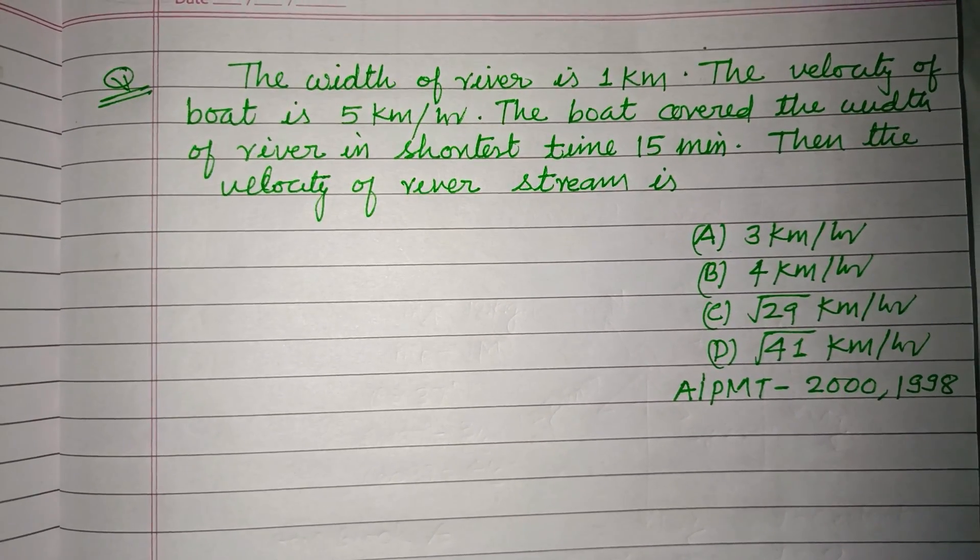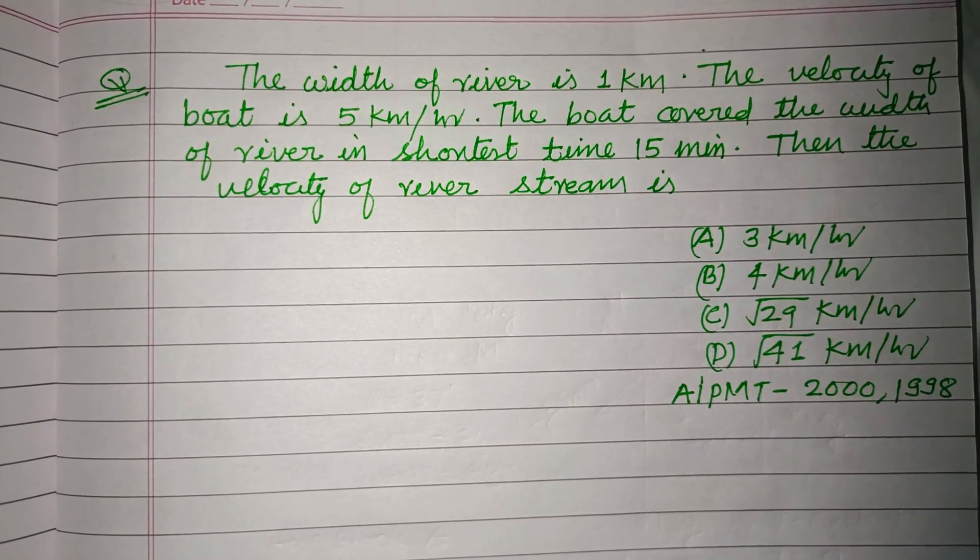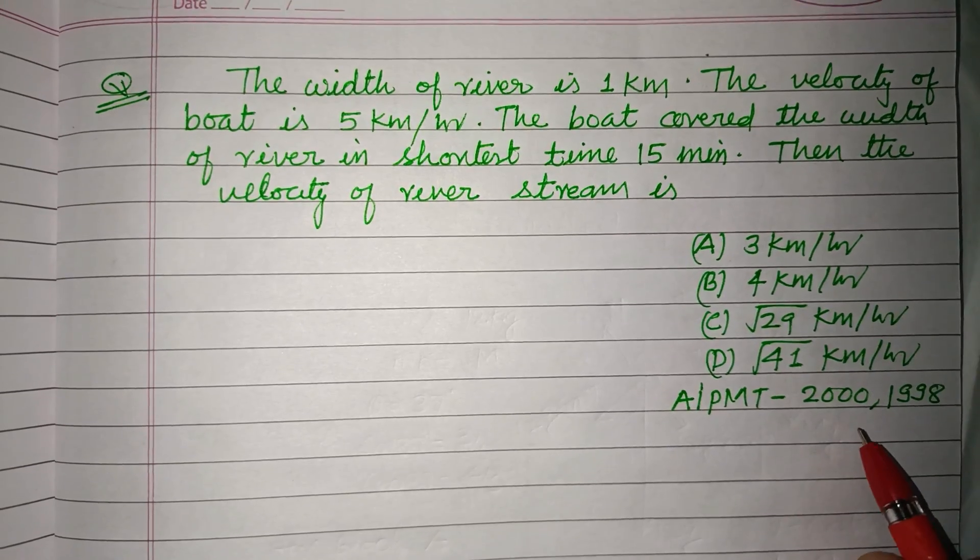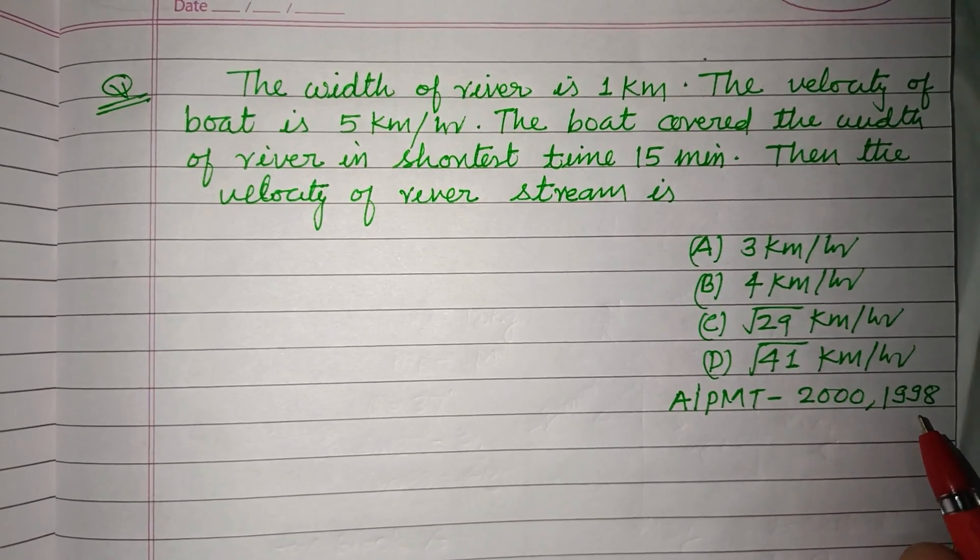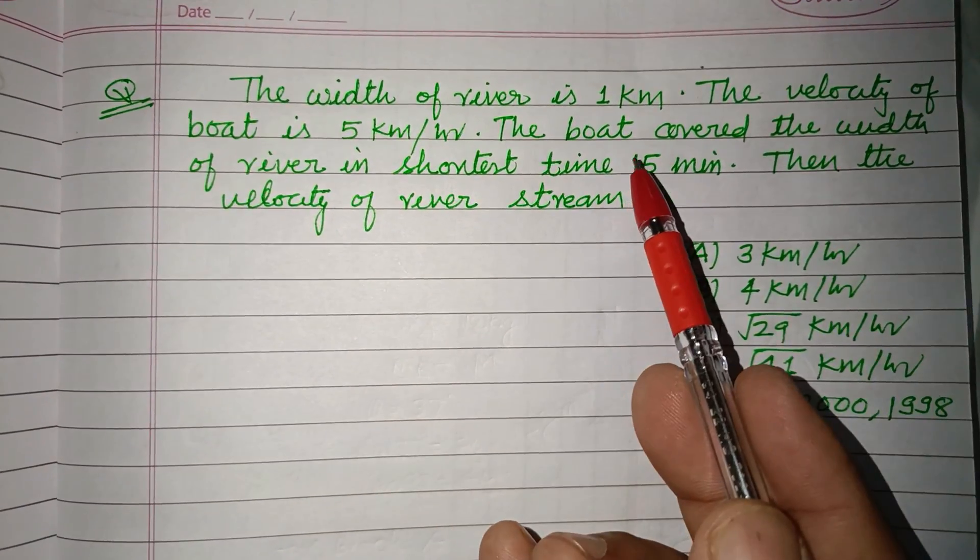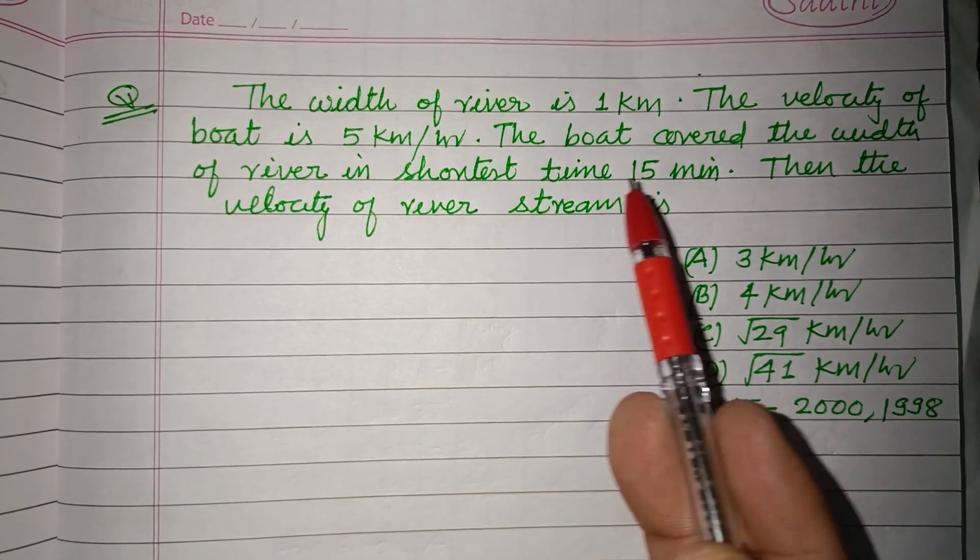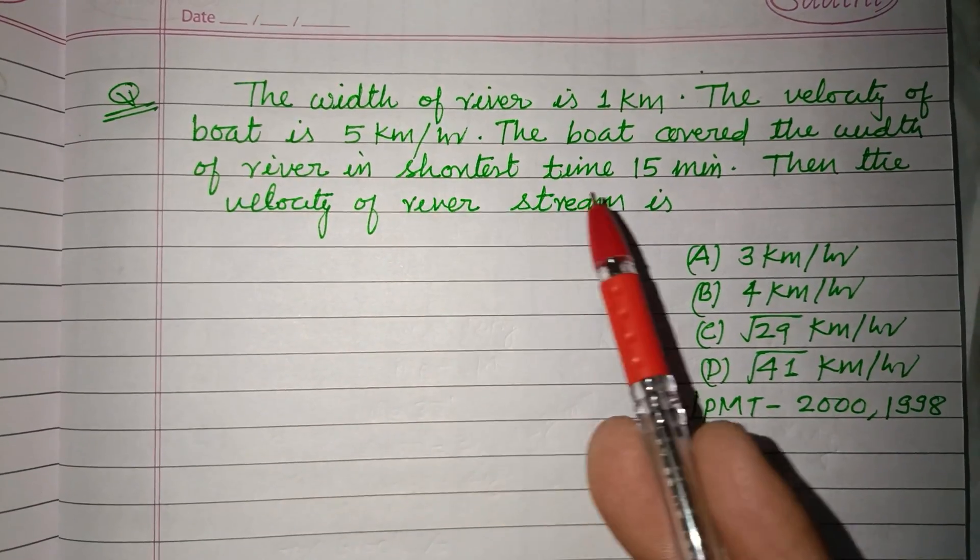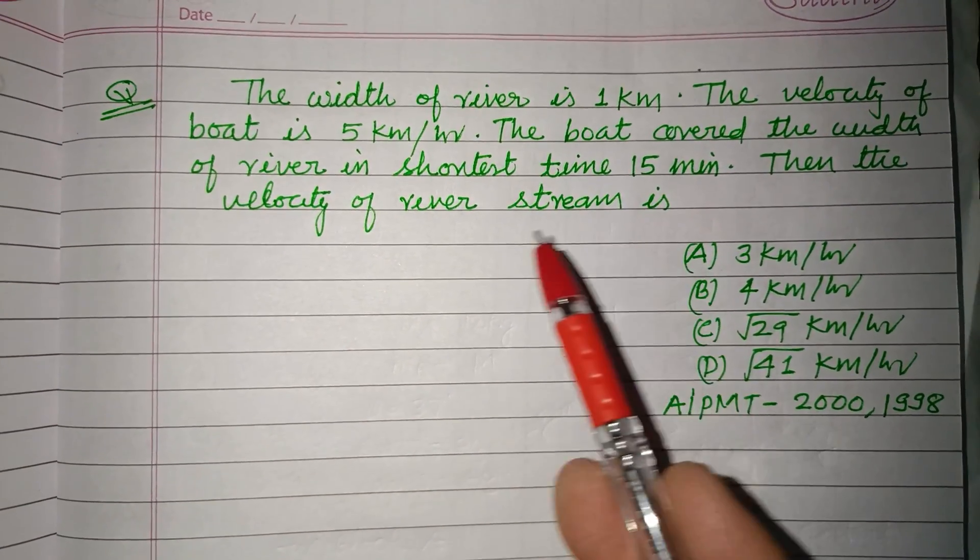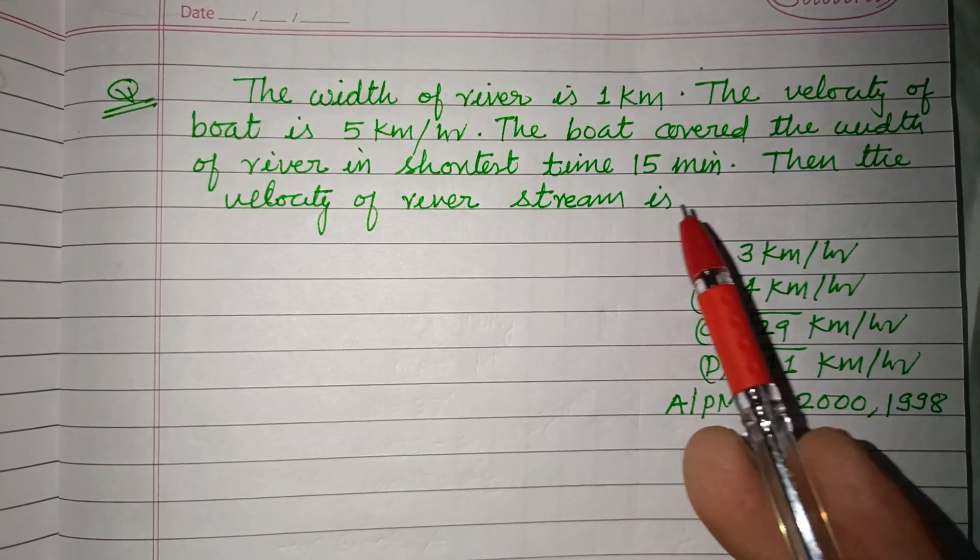Hello viewers, warm welcome to this YouTube channel. This is a question from All India PMT 1998. The width of river is 1 kilometer. The velocity of boat is 5 kilometer per hour. The boat covered the width of river in shortest time 15 minutes. Then the velocity of the river stream is?